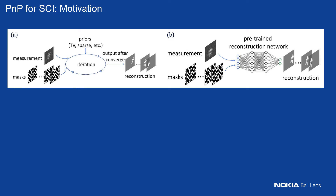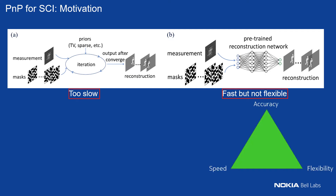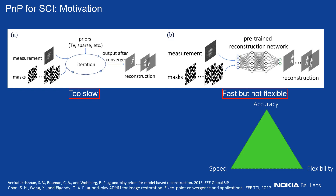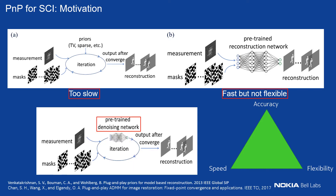Existing solutions use different priors such as total variation, sparsity, or low-rank priors. The next solution is of course to train a pre-trained reconstruction network, but the neural network needs to be very deep and training time is also an issue. The left approach is too slow; the second is fast but not flexible — if you change the mask, you have to re-train the network. To fill the gap in accuracy, speed, and flexibility, we propose the PnP network for SCI.